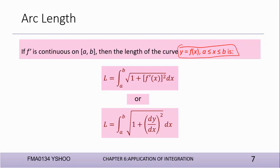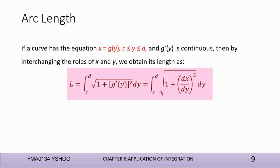What if you have a curve defined as x equals g(y)? No need to worry — they are almost the same. The difference is: when you have x equals g(y), you use dx/dy instead. The formula is exactly the same structure, just replace dy/dx with dx/dy. So now let us look at the first example of how to find the arc length.